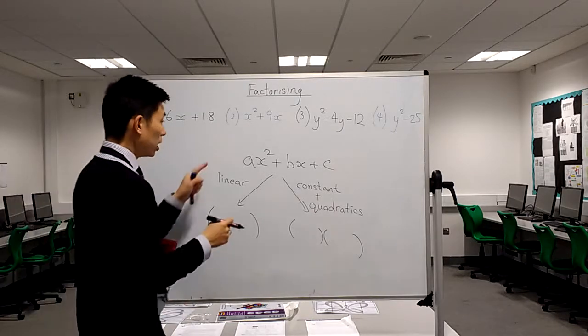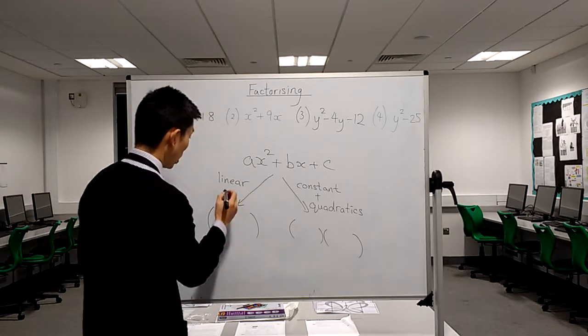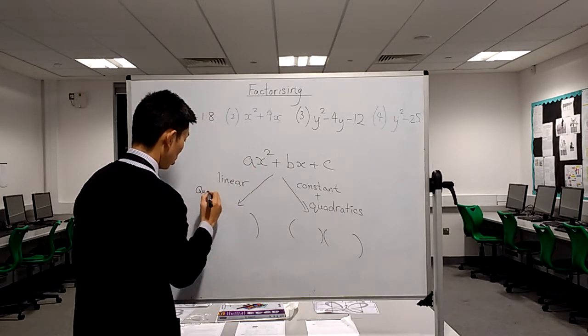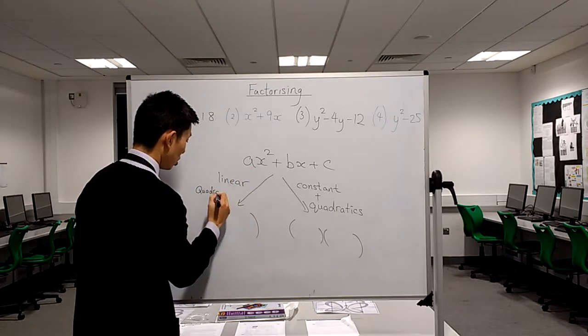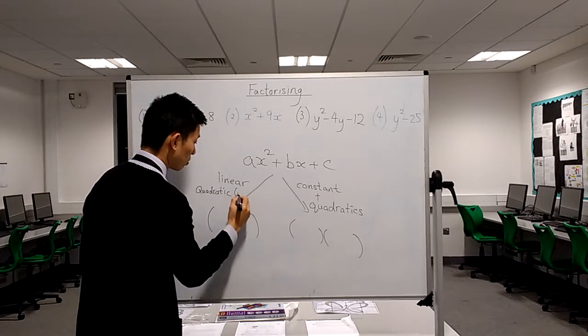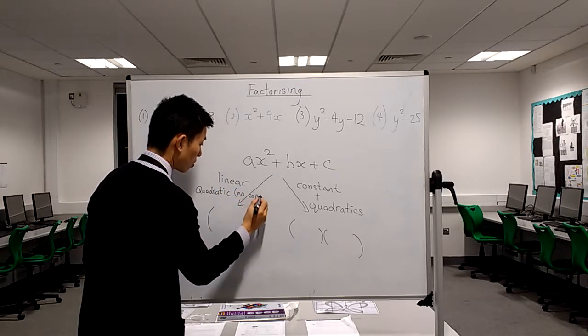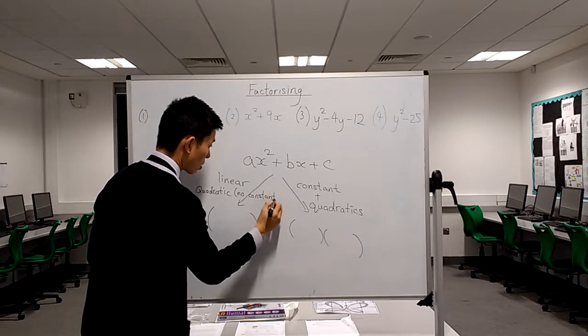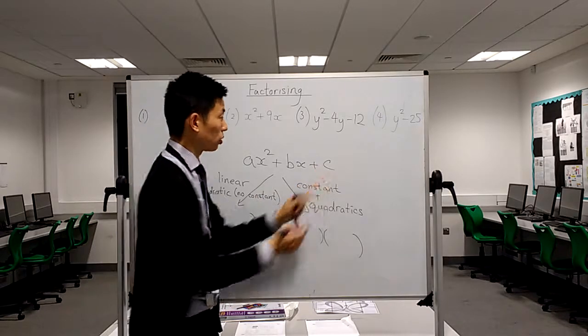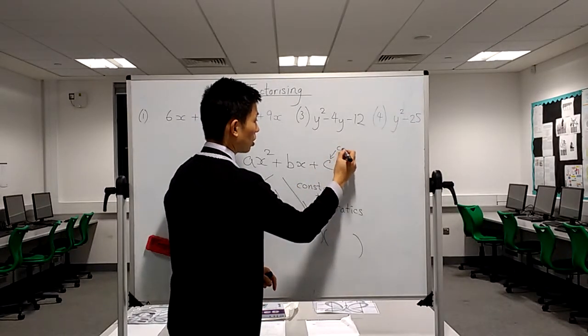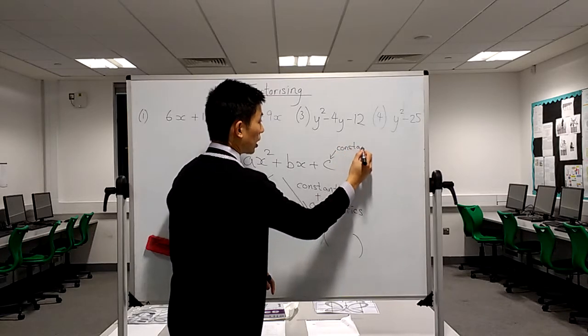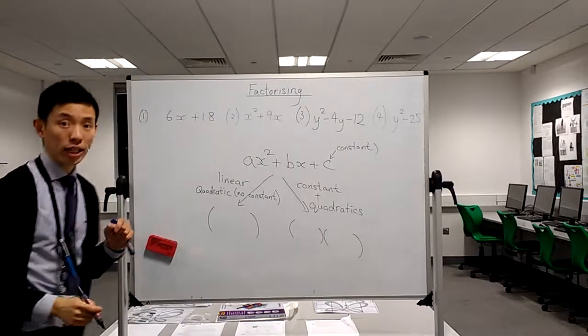Alternatively, if it's quadratic but has no constant, which is this c value here, then again it will be a single bracket.